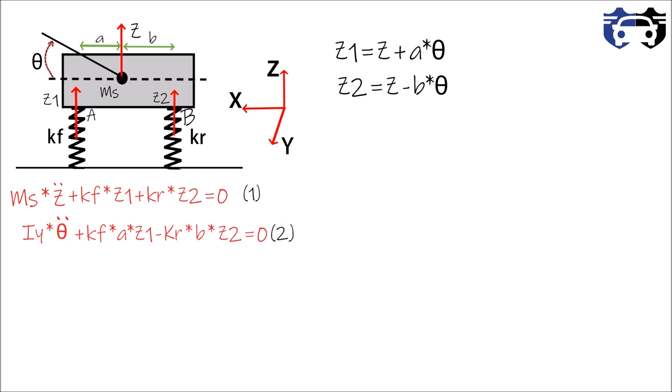I'm going to substitute some values in above equation one and two for solving these equations easily. So I'm considering D1 equals to Kf plus Kr divided by Ms. D2 equals to a multiply by Kf minus b multiply by Kr, whole divided by Ms. D3 equals to Kf into a square plus Kr into b square, whole divided by Iy, where Iy is the moment of inertia given by Ms multiply by Ry square. You can see that the car is pitching along y axis, so that's why we have written Iy.